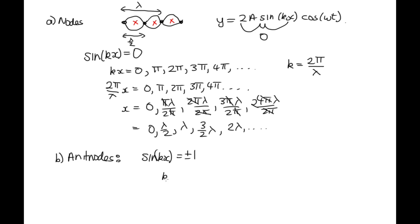So that occurs when kx is equal to 90 degrees, which is π over 2. And then 270 degrees, which is 3π over 2, 5π over 2, 7π over 2, et cetera.